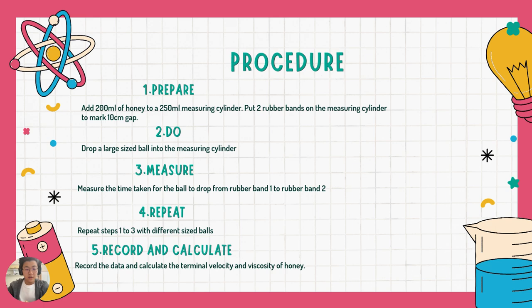So, moving on to the experiment itself. The procedure has five steps. Number one is you prepare the experiment. You add 200 milliliters of honey to a 250 milliliter measuring cylinder, and then you put two rubber bands on the measuring cylinder, one here, one here, and the gap should be 10 cm.